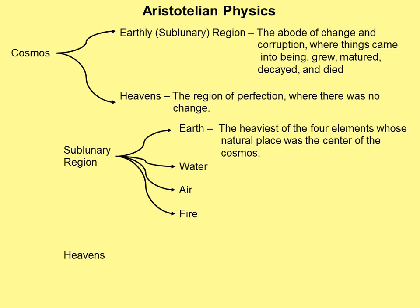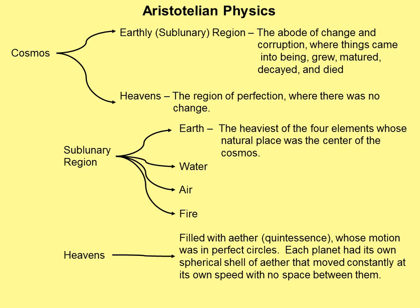On the other hand, the heavens, out there in space, were filled with something called ether, or quintessence. Space was actually filled with this ether, and this ether moved around the earth in perfect circles. Everything had to be perfect in the heavens.